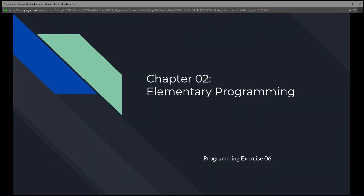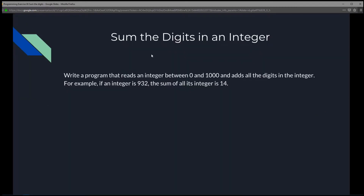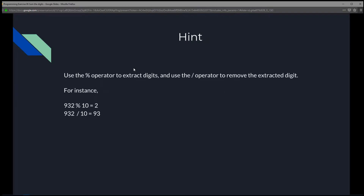This is Chapter 2, Elementary Programming, Programming Exercise 6: Sum the Digits in an Integer. We're going to write a program that reads an integer between 0 and 1000 and adds all the digits in the integer. For example, if an integer is 932, the sum of all its digits is 14. To do this, we're going to use the modulus operator to extract the digits and the divide operator to remove the extracted digits.